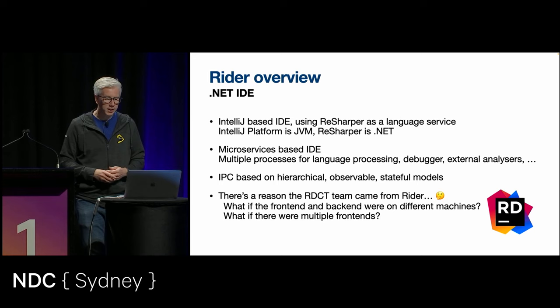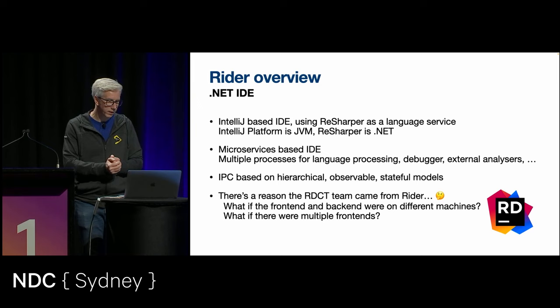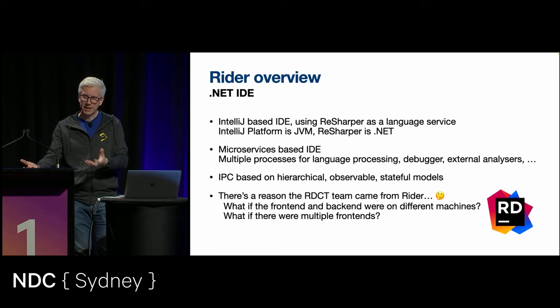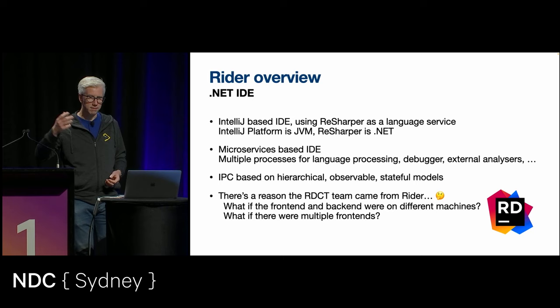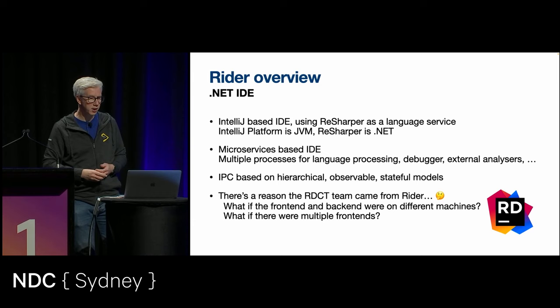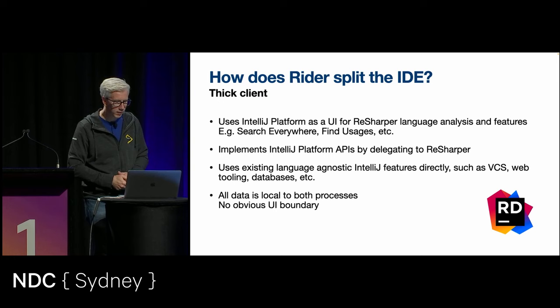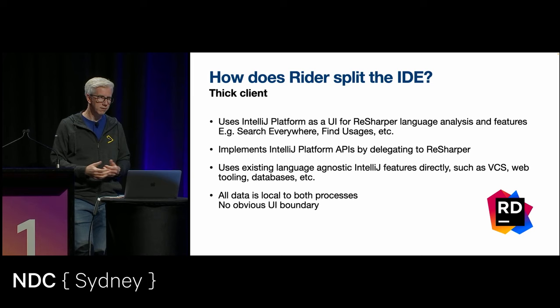We've built an inter-process communication model which works with that. The inter-process communication is a hierarchical model — the models are observable and stateful, and they pass just the right amount of information across. For example, for the Alt+Enter menu, we just send over text, icon, and ID for each menu item. It's a very lightweight, simple process. The team that built the remote development and collaborative tools came from Rider, taking these ideas — because if you've got a microservices-based IDE, what if the UI and the ReSharper language host are on different machines? That's remote development. What if there were multiple front ends talking to one ReSharper instance? That's Code With Me.